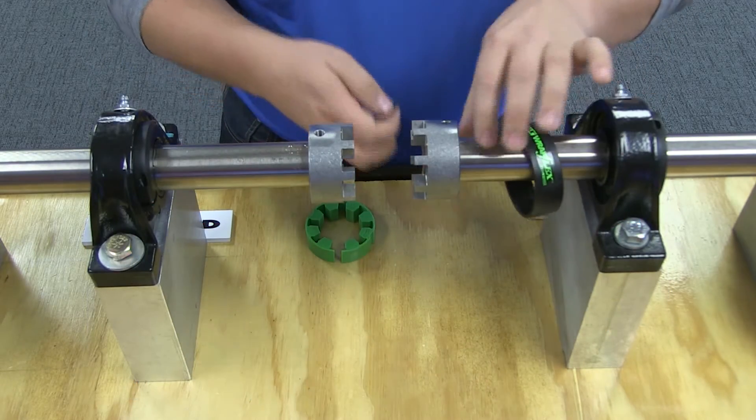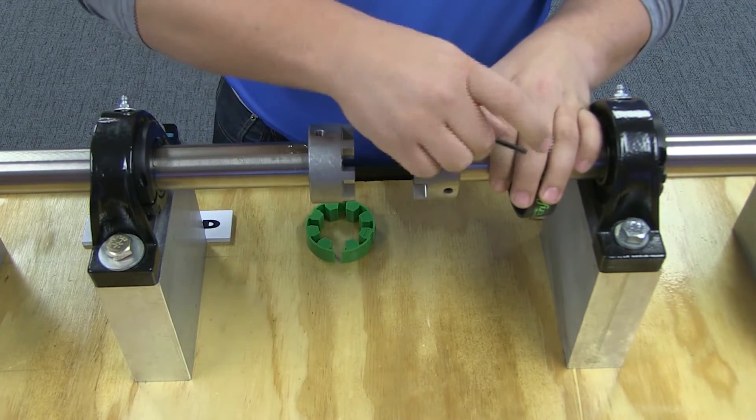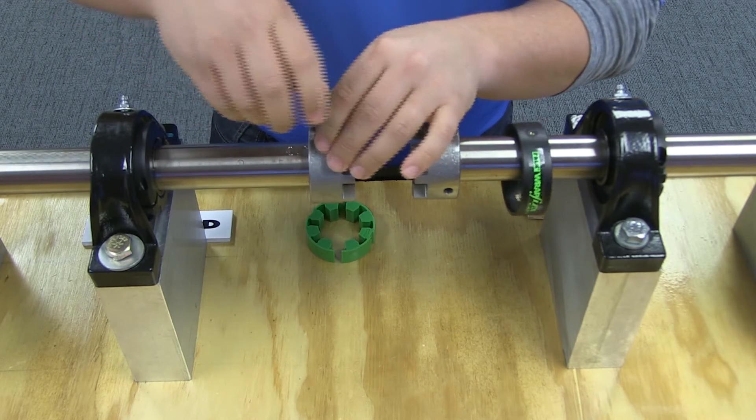Before moving the shafts into place, make sure the cover is on one of the shafts beyond your working area, so that it can be brought back later over the hubs to finalize your installation.